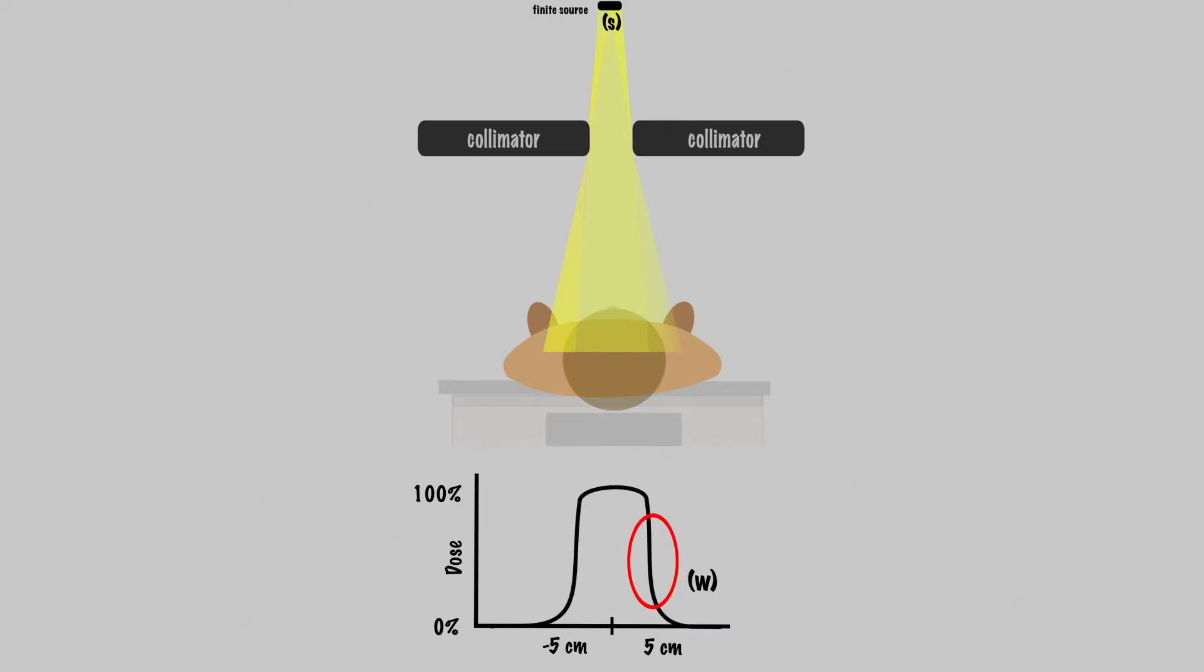We can attach a formula to this to calculate what the geometric penumbra would be for different distances. We just said that penumbra is directly related to S and SSD and inversely related to SCD. Penumbra is also directly related to the depth of treatment. So our actual penumbra equation looks like this.